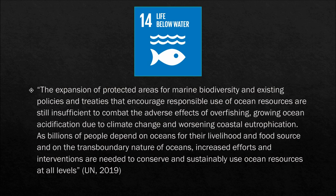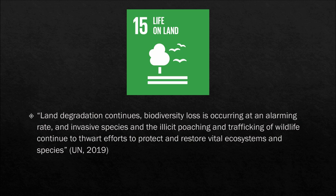You would think that agriculture doesn't impact the oceans, but think about pollution — pesticides or herbicides can be leached into streams, which eventually go into rivers and accumulate in our oceans. Sustainable Development Goal Number 15 is Life on Land: land degradation continues, biodiversity loss is occurring at an alarming rate, and invasive species and the illicit poaching and trafficking of wildlife continue to thwart efforts to protect and restore vital ecosystems. Both land degradation and biodiversity loss are directly impacted by agriculture.